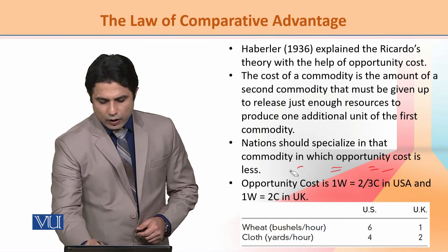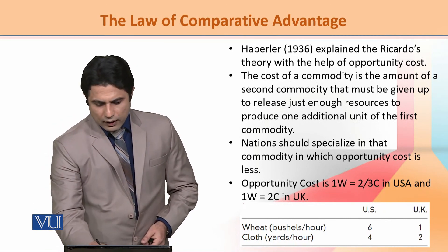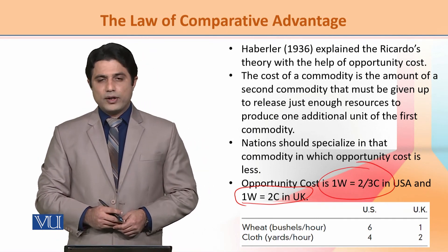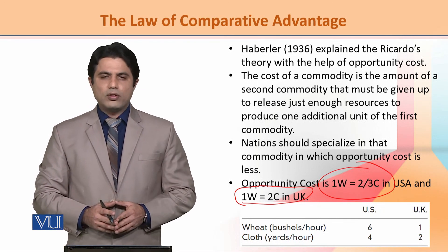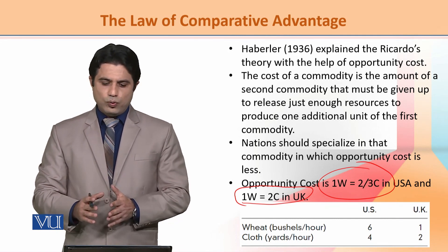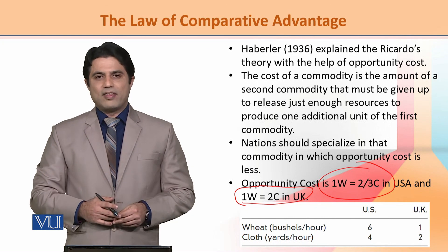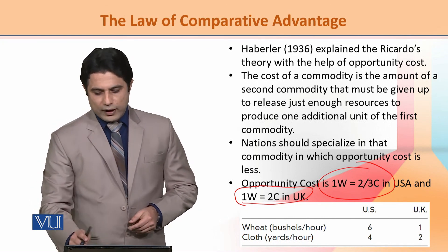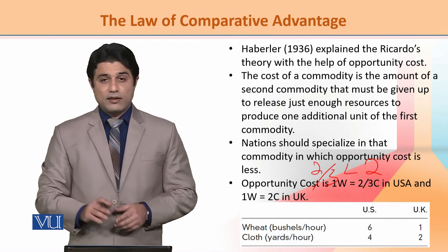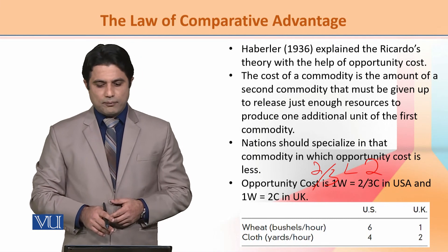According to this theory, how will specialization occur? It is simple — we look at whose opportunity cost is lower. Opportunity cost in USA: 1 wheat equals 2/3 (or 0.667) unit of cloth. Opportunity cost in UK: 1 wheat equals 2 cloth. So the opportunity cost of wheat is lower in the USA, and the USA will move toward wheat production.